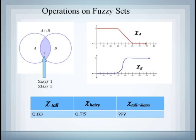In particular, if we know how much an element belongs to the fuzzy set of tall people, and we know how much it belongs to another set, say, of hairy people, then we need a method of determining its level of membership in the fuzzy set of tall and hairy people.